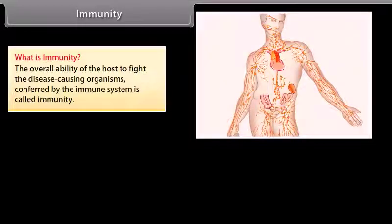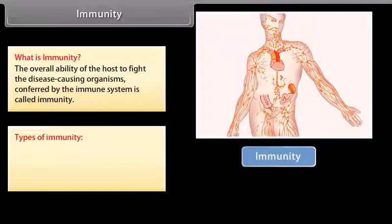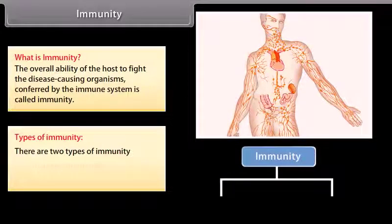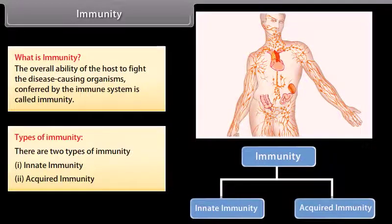What is immunity? The overall ability of the host to fight the disease-causing organisms, conferred by the immune system, is called immunity. There are two types of immunity: innate immunity and acquired immunity.